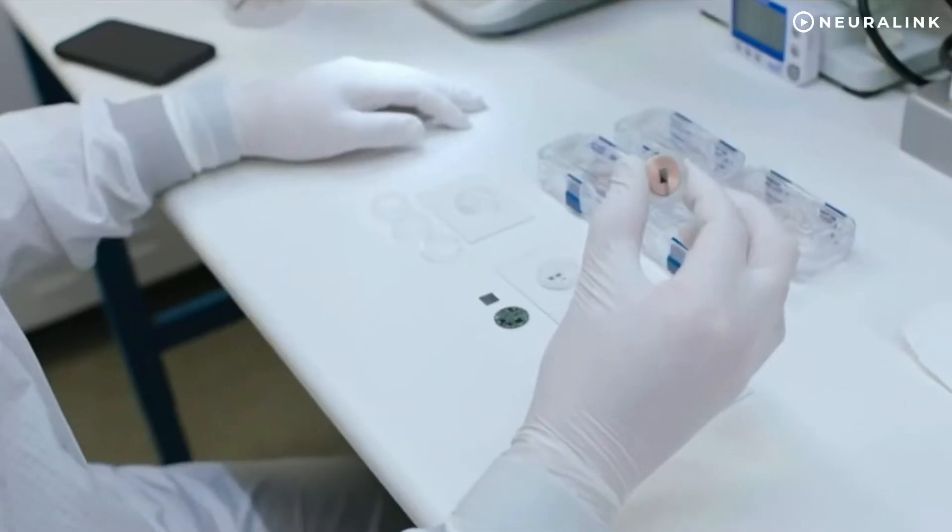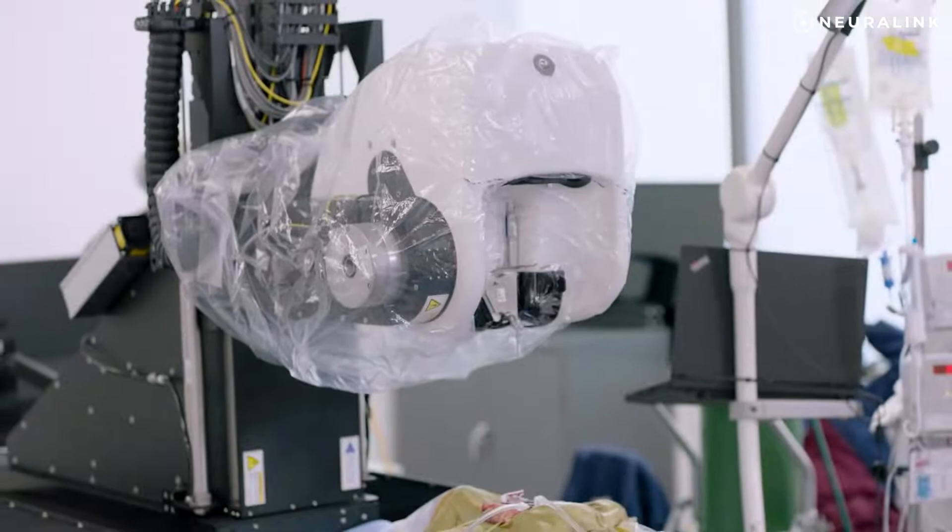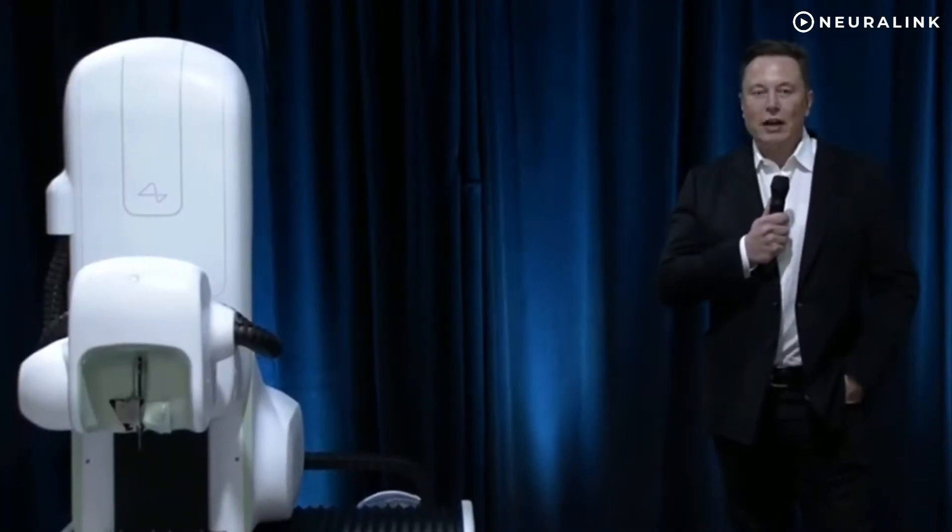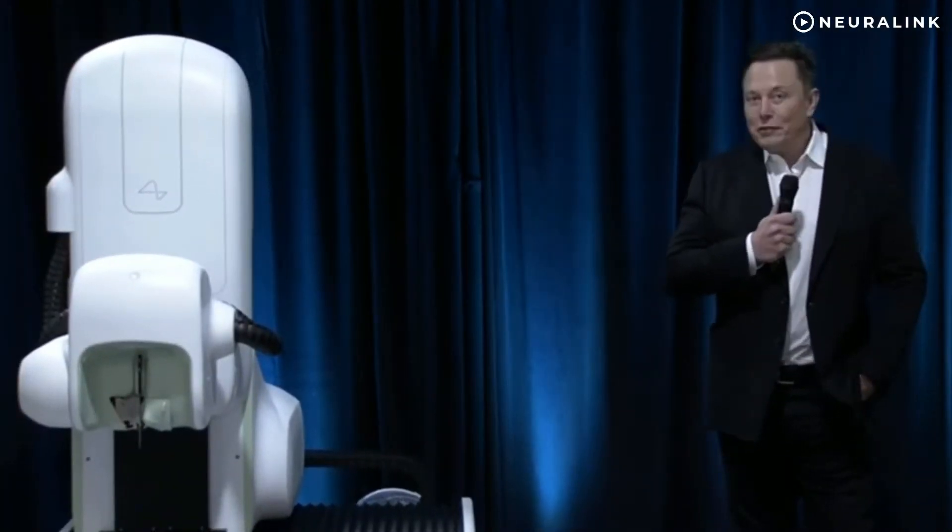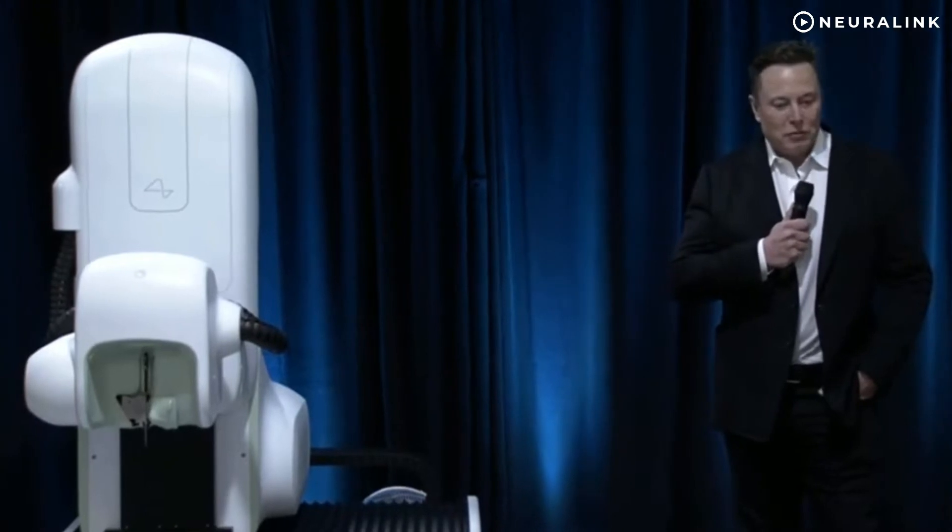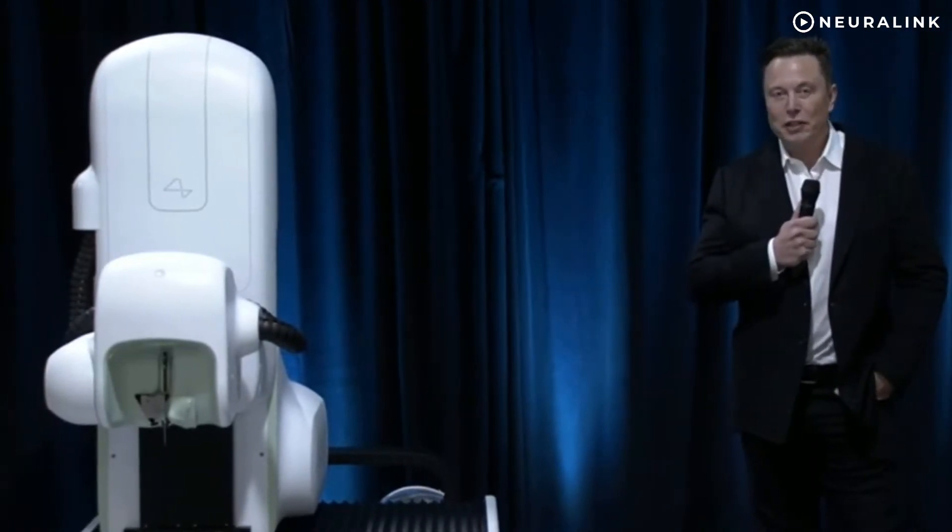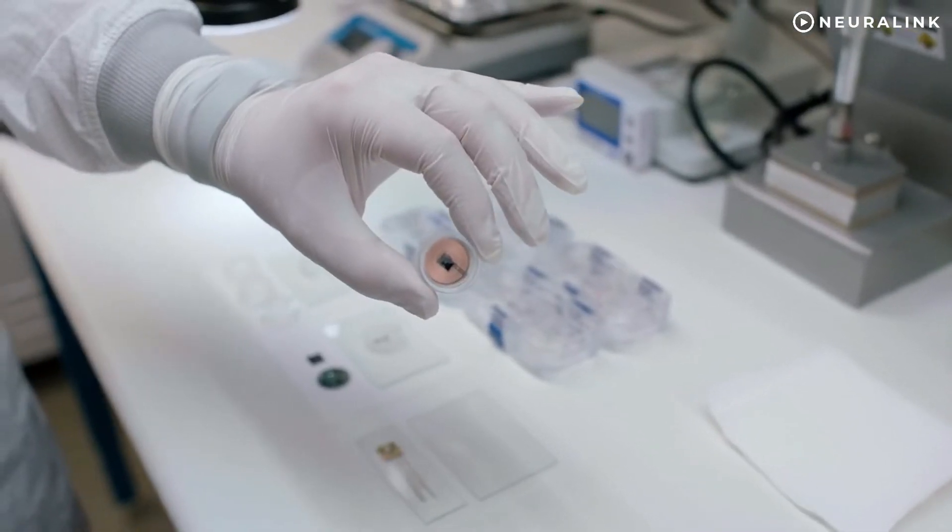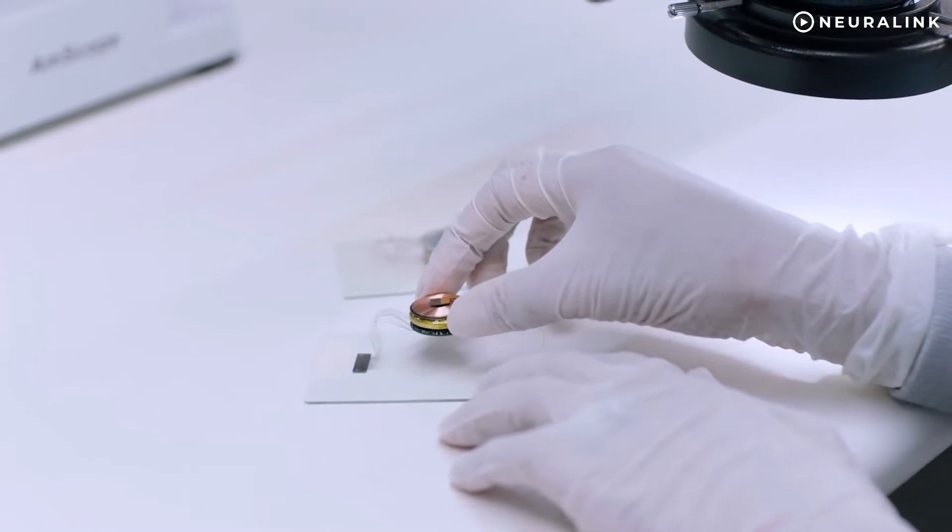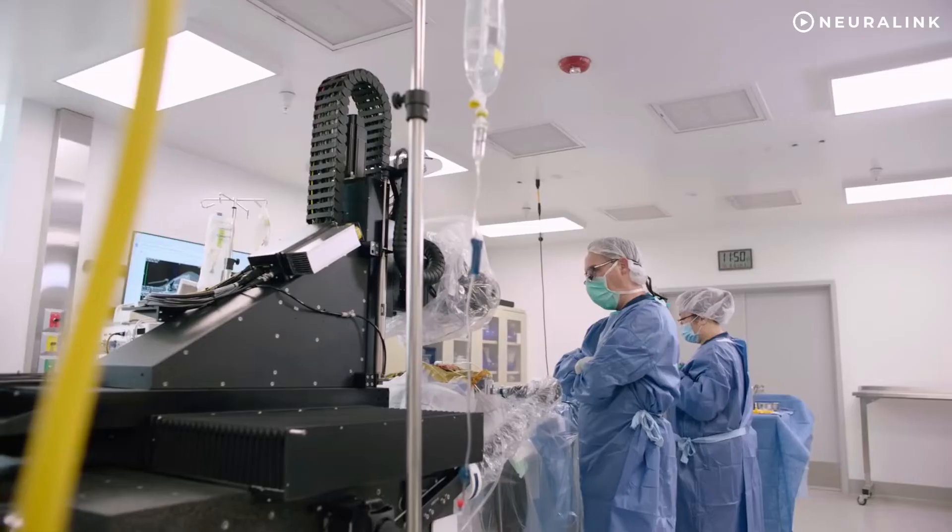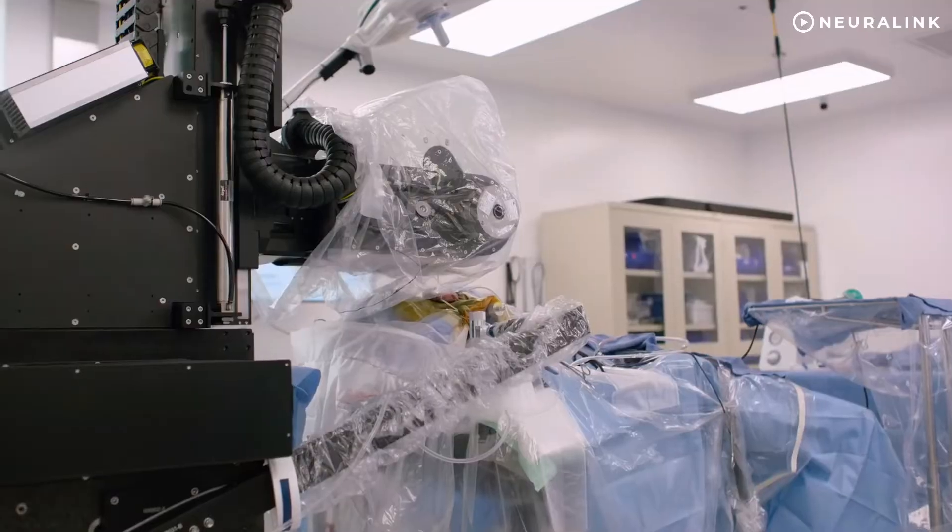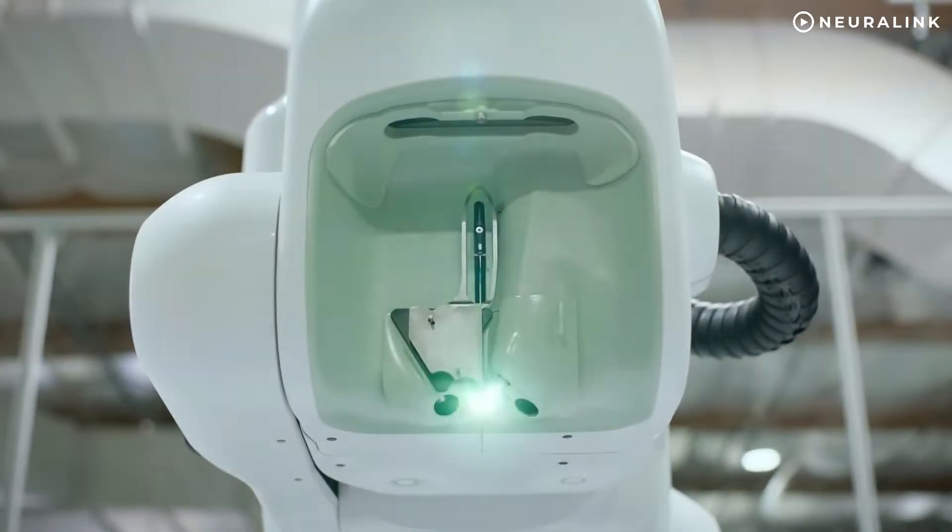It is a system that involves ultra-thin probes that will be inserted into the brain, a neurosurgical robot that will perform the operations, and a high-density electronic system capable of processing information from neurons. The probes consist mainly of polyimide, a biocompatible material with a thin gold or platinum conductor, inserted into the brain through an automated process performed by the company's surgical robot.